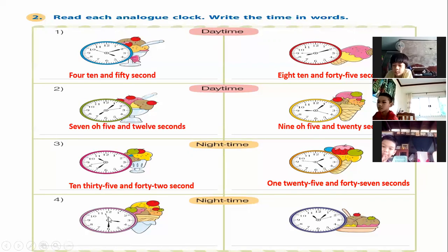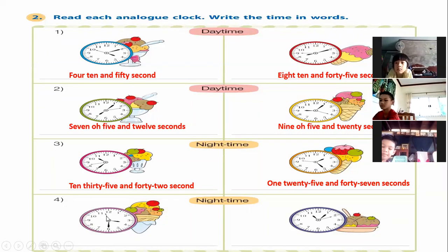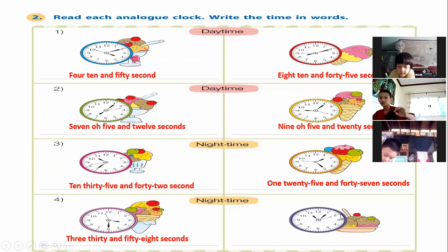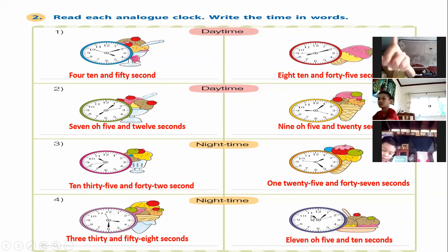Now number four. The short hand is in between three and four, and the long hand is on six — so that means three thirty. The seconds are close to 50, around 58 seconds, so the time is three thirty and 58 seconds. On the right side, the short hand is on eleven and the long hand is quite close to one, which means five minutes — so eleven oh five. The seconds hand is around 10, so eleven oh five and 10 seconds.